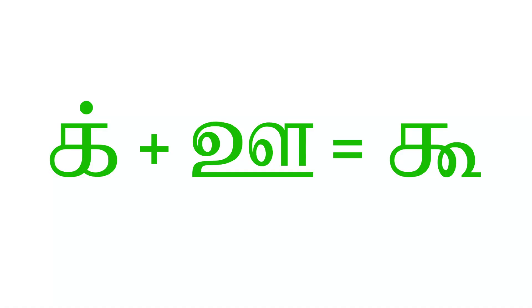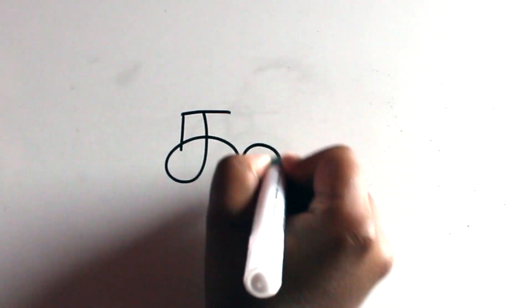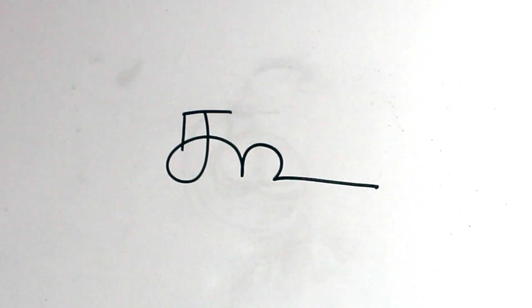Ik and ū make kū. Now this is a bit more complicated to learn, so here it goes. Again.